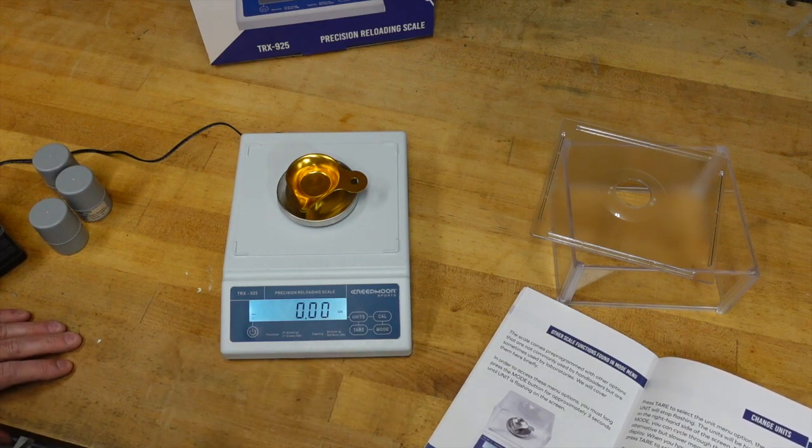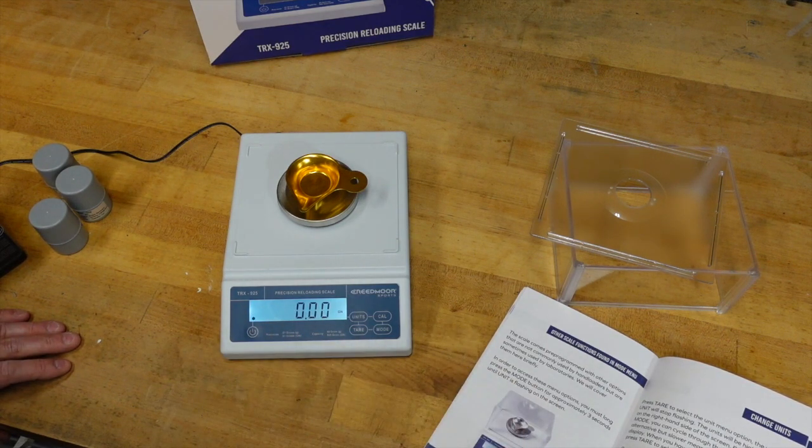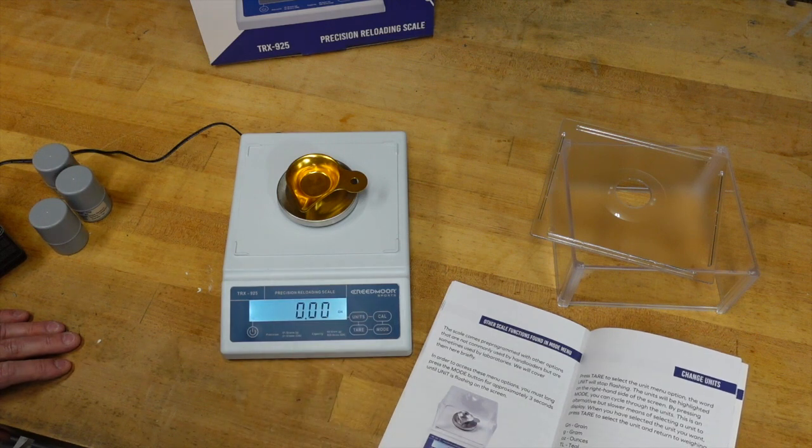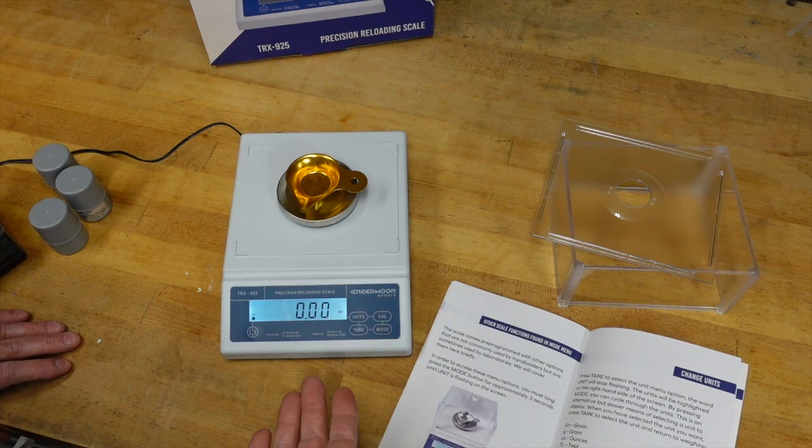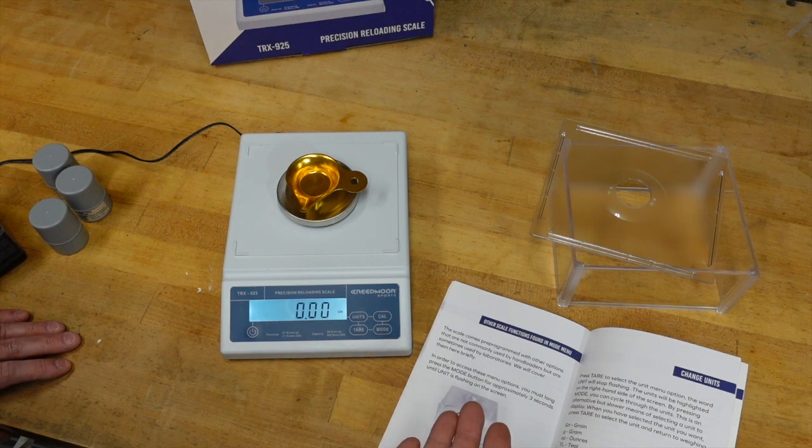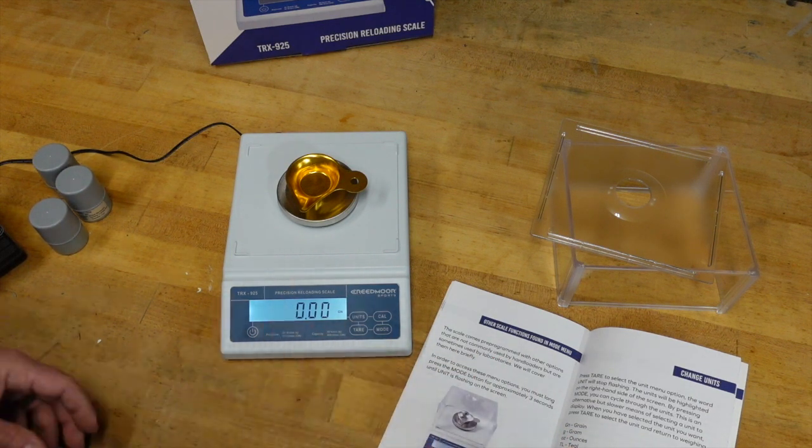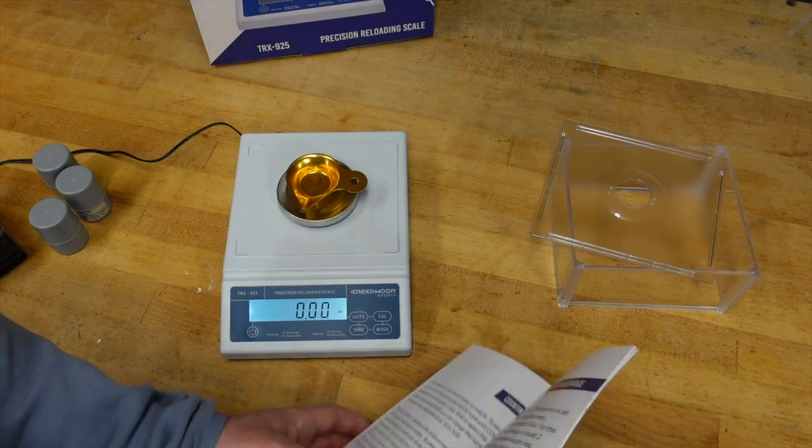And a lot of the scales that we use in reloading are going to have those options. So if you're used to one in particular, that's great. I know when I sort primers, I do it by a different method than grains. And you'll see that here in a minute.